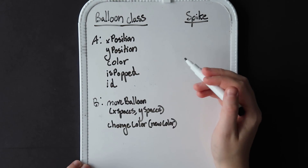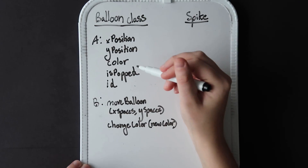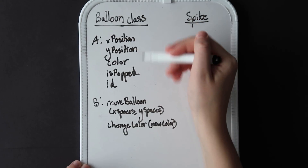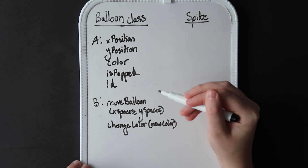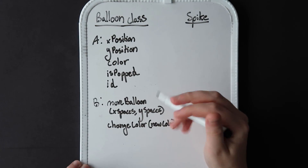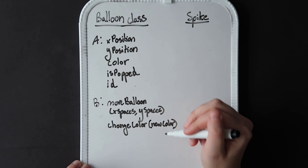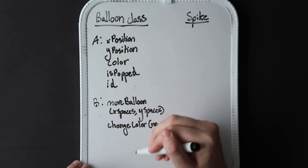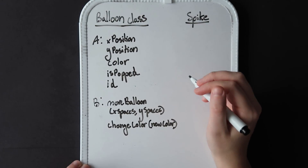This is essentially the blueprint for our balloon class — what balloons consist of: an X position, a Y position, a color, an ID, and whether it's popped. This defines how a balloon can interact with other objects or with itself, how you can modify the balloon. This defines what a balloon is for our game, and we can always add more functionality, more behavior, and more data pieces as well.